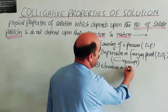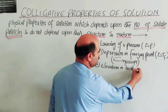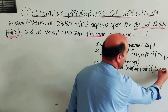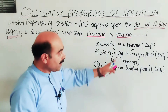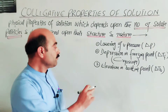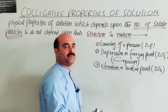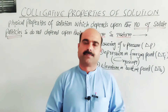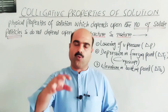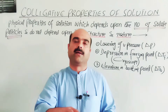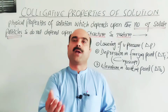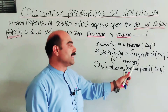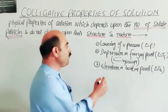The third colligative property is elevation in boiling point, represented as delta Tb. When a solute is added to a solvent like water, whose normal boiling point is 100 degrees C, the boiling point of the solution is higher than that of the pure solvent. This increase is called elevation in boiling point, also known as ebullioscopy.